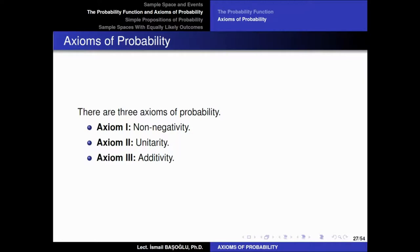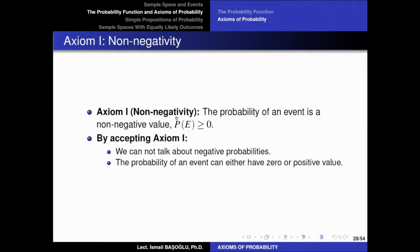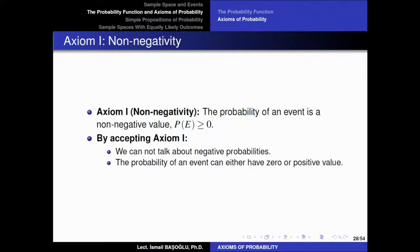Let us start with the non-negativity axiom. Axiom 1, non-negativity, states that the probability of an event is a non-negative value, which means the probability of an event can never be less than 0. So the probability of an event E can only be greater than or at least equal to 0. We are accepting this axiom. Once we state that this is an axiom, every member of the class should believe that this is true, because axioms are things we need to believe in — we cannot prove axioms. They are common assumptions.